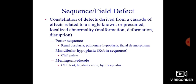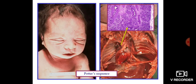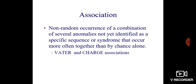A mandibular hypoplasia can lead to Pierre Robin sequence, leading to cleft palate. A meningomyelocele can similarly lead to a sequence or field defect which includes club foot, hip dislocation, and hydrocephalus. This picture shows pulmonary hypoplasia with histopathologic evidence.